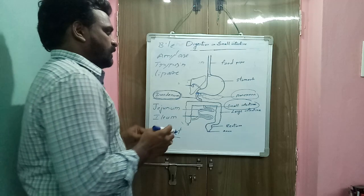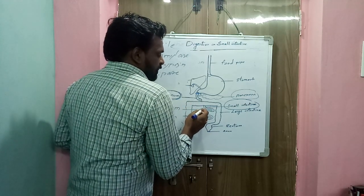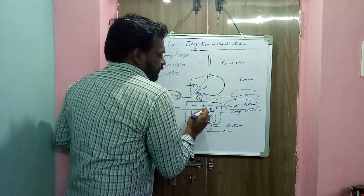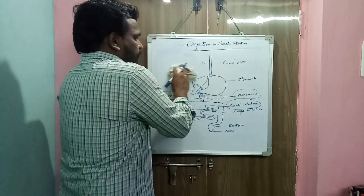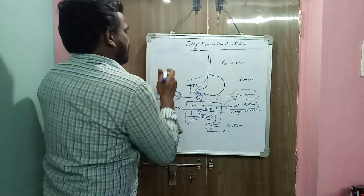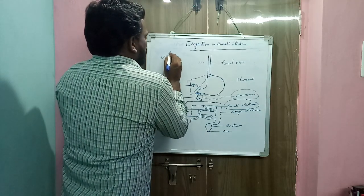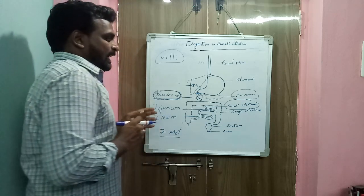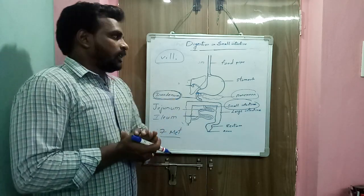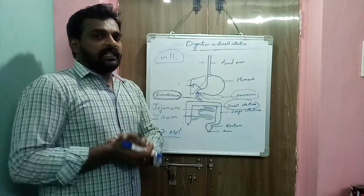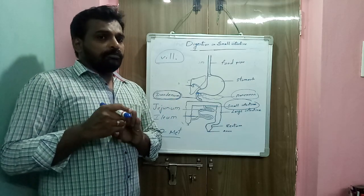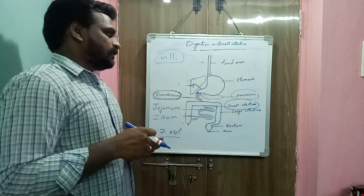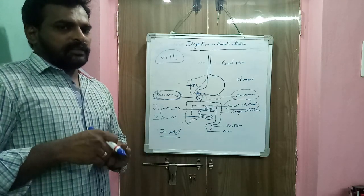Another function of the small intestine involves its inner surface, which has millions of finger-like elevations called villi. The function of villi is to increase the surface area of the small intestine and to facilitate absorption of digested food materials into the bloodstream. So the small intestine has two functions: complete digestion of food materials, and absorption of digested food materials.